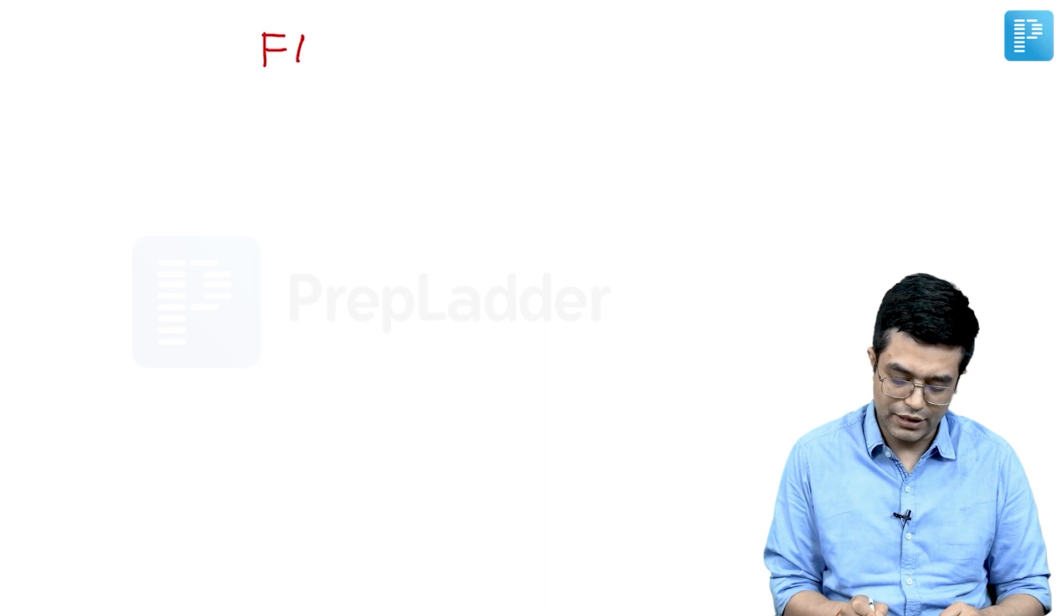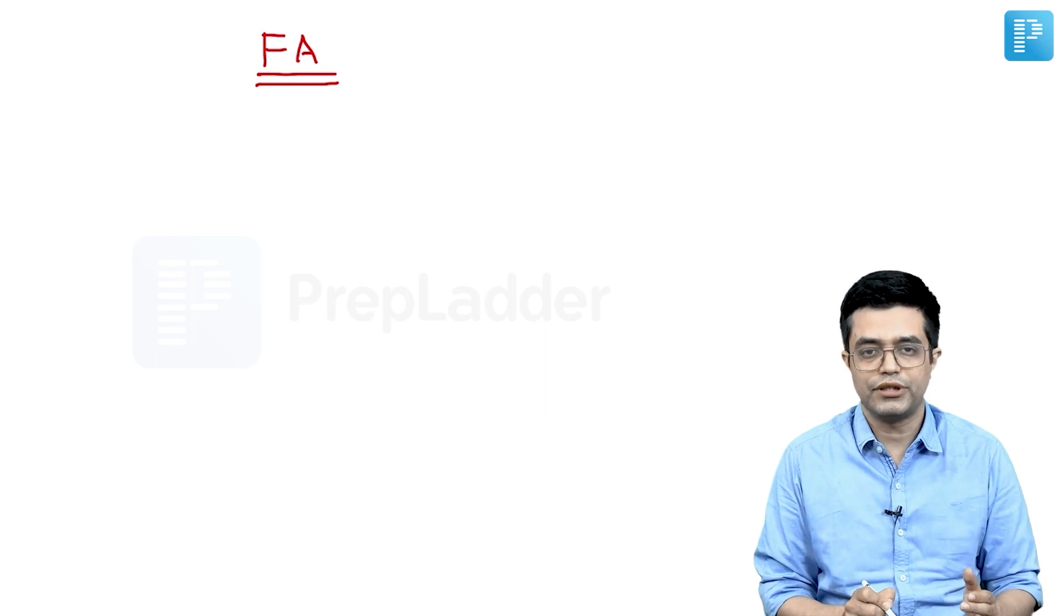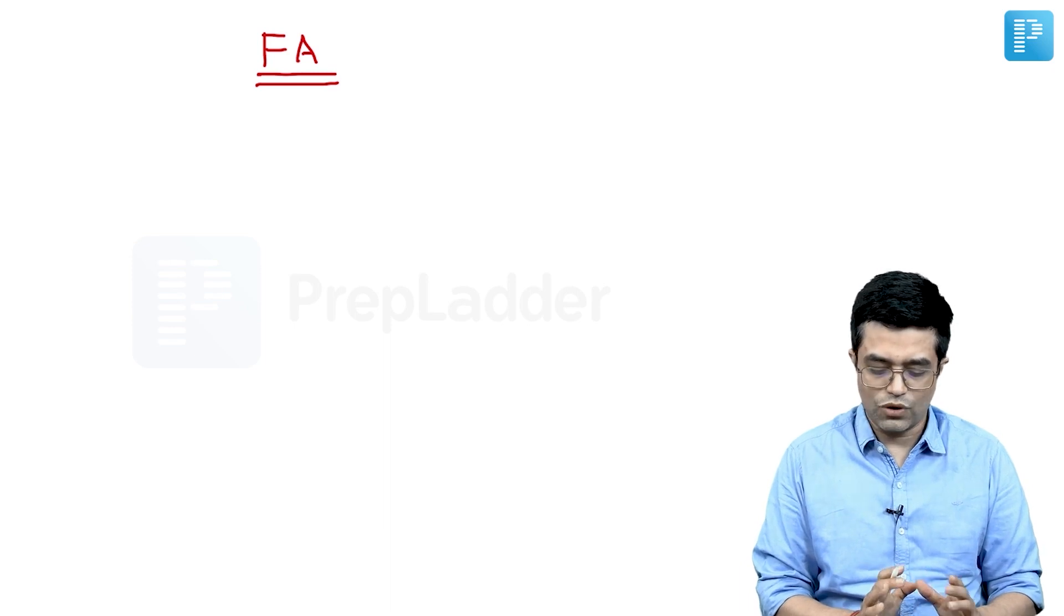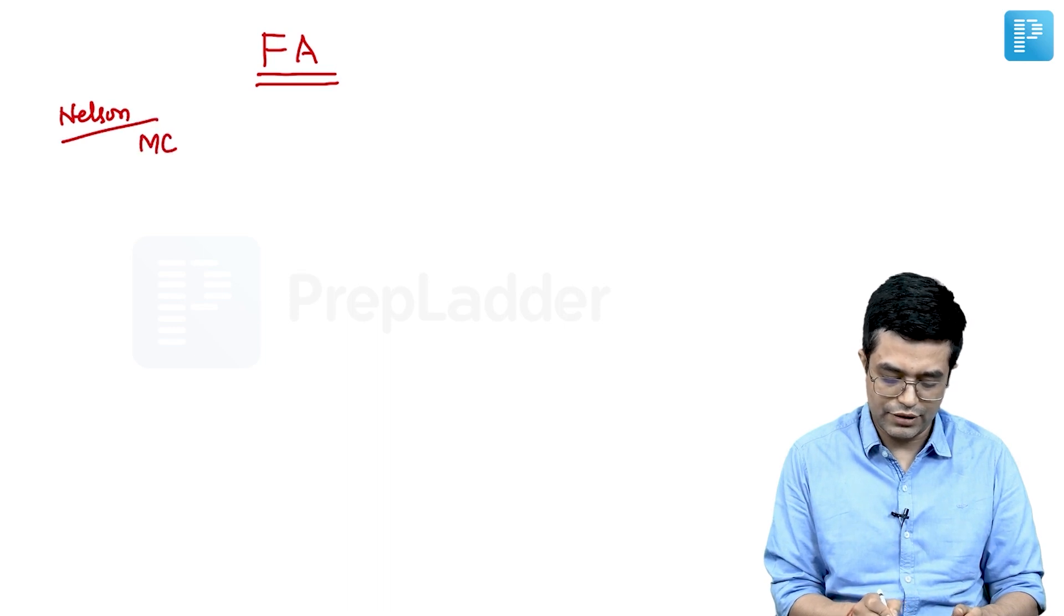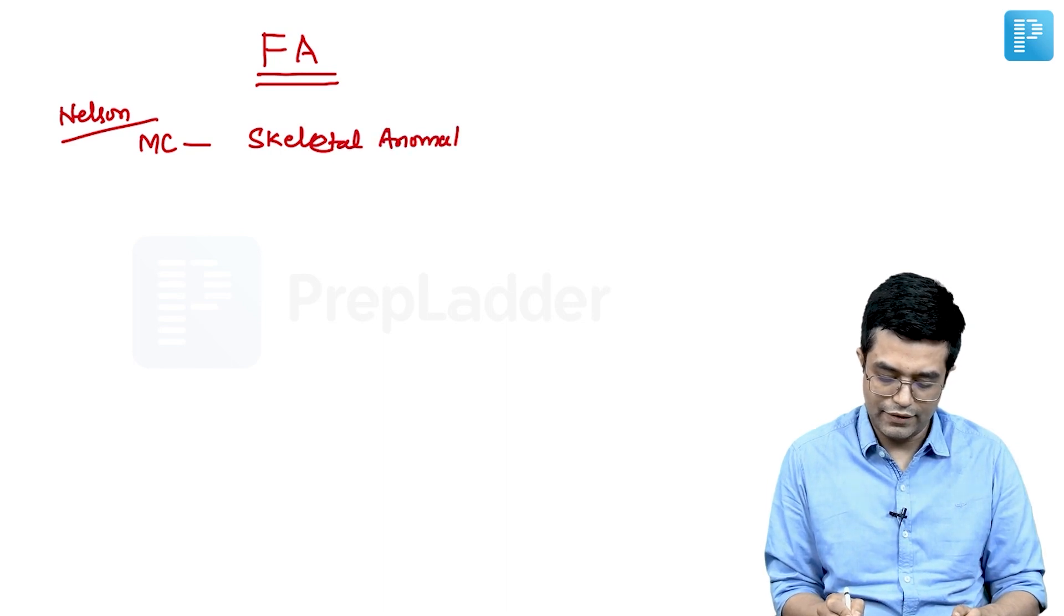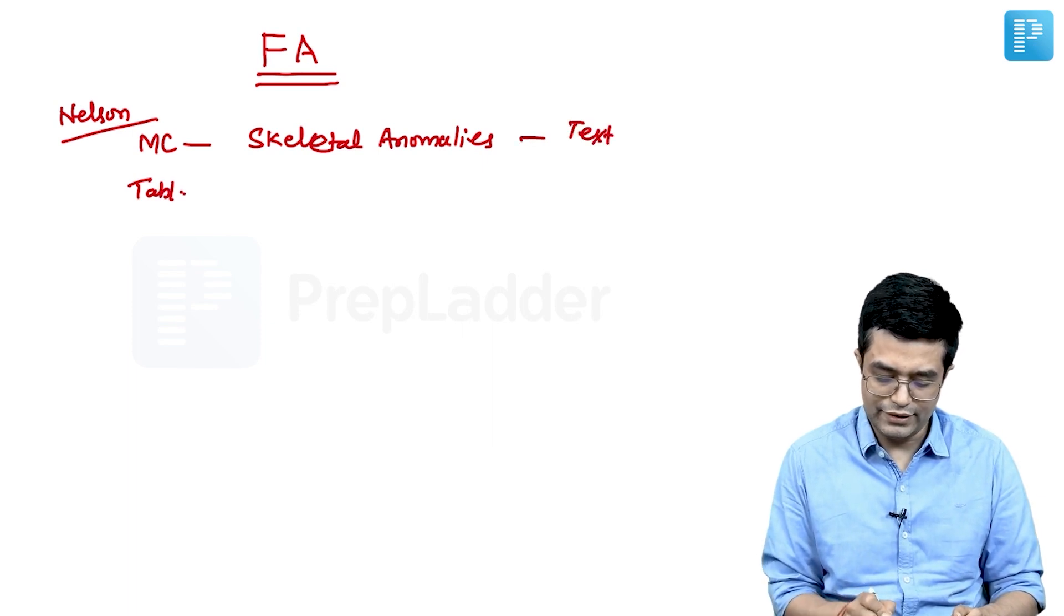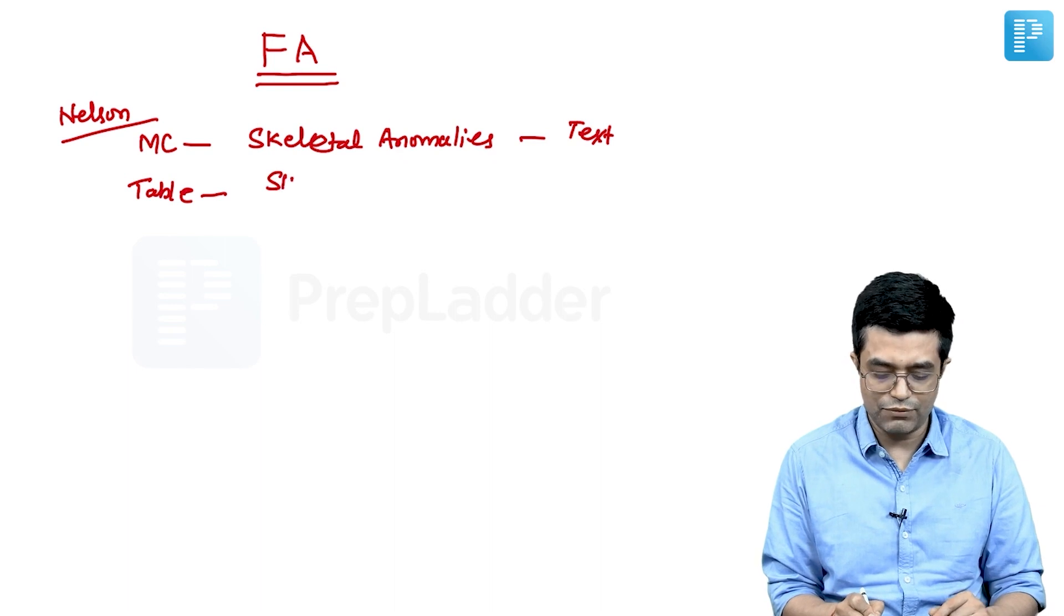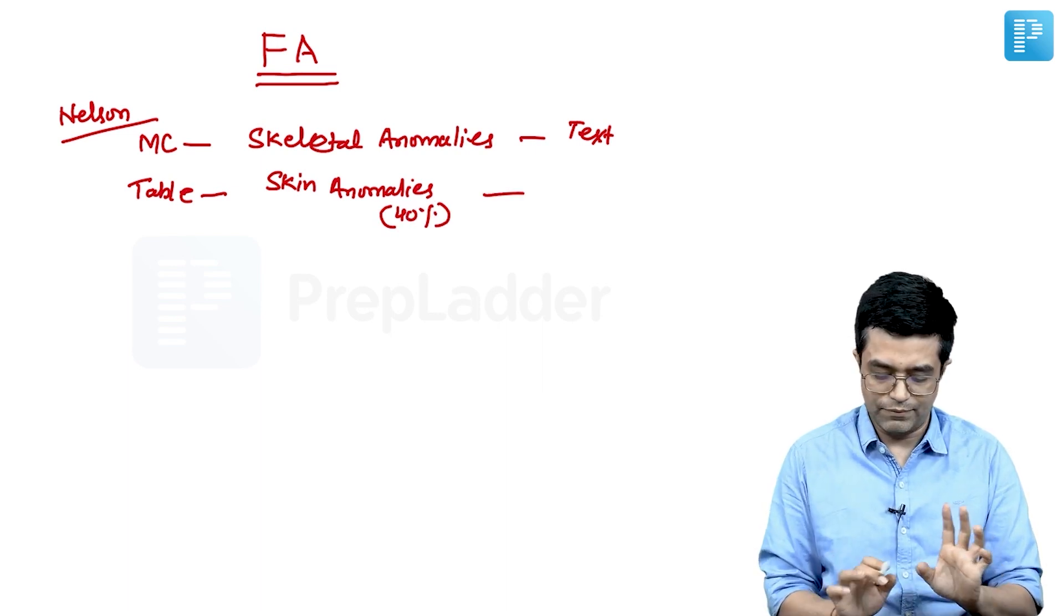There are a few points regarding Fanconi Anemia you need to remember. There's a controversial thing: Nelson is contradicting itself. Nelson talks about in the text that most common manifestations are the skeletal anomalies. Then in the table, it first mentions skin abnormalities as most common at about 40 percent.